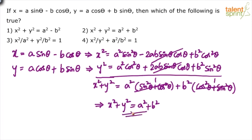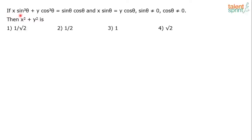So finally, x² + y² = a² + b², which is option 2. Now the second problem: if x·sin³θ + y·cos³θ = sinθ·cosθ and x·sinθ = y·cosθ, where sinθ ≠ 0 and cosθ ≠ 0, then x² + y² equals — options are 1/√2, 1/2, 1, or √2.